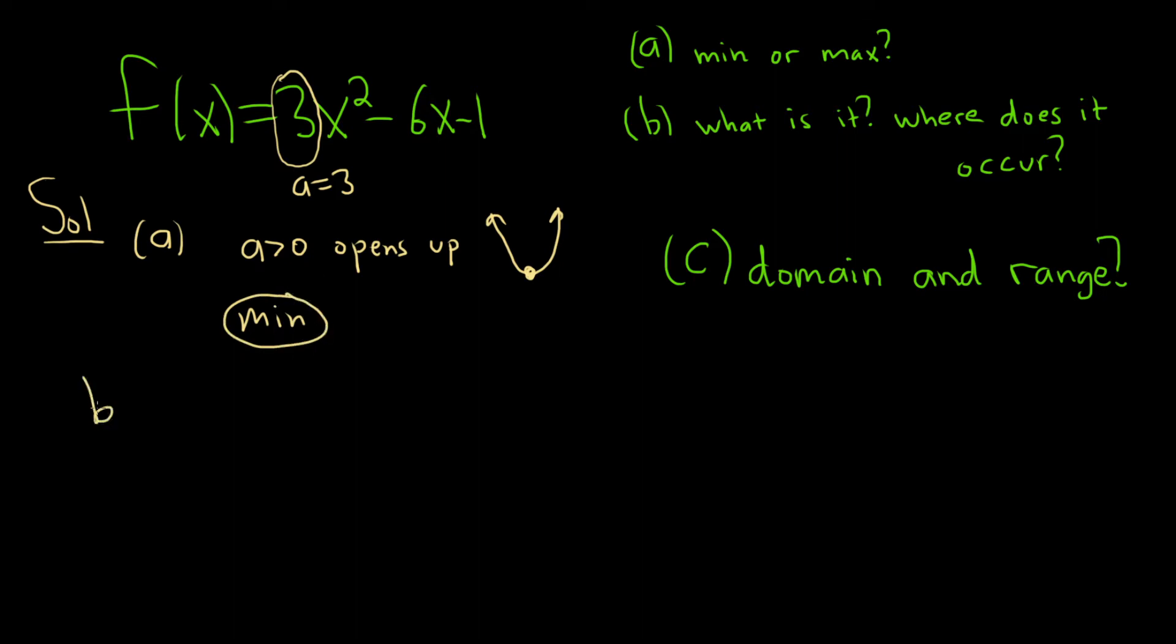B. Now it wants to know what the minimum is. So what is it, and where does it occur? That's the x value. So the minimum is the y value. Where it occurs is the x value.